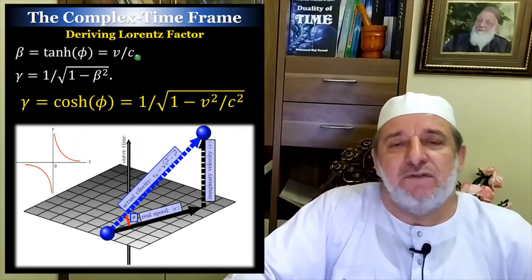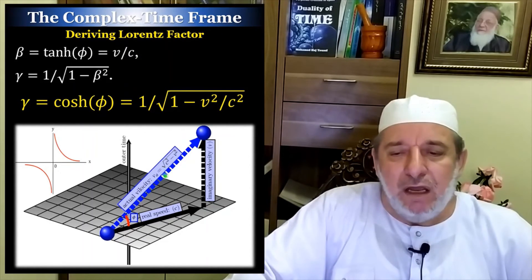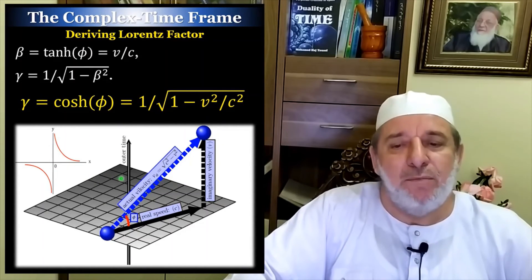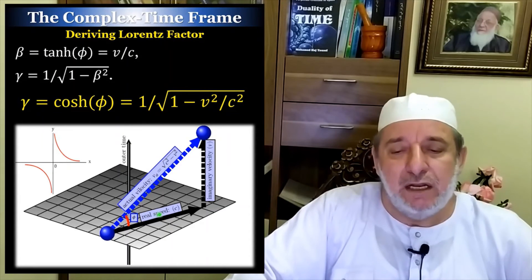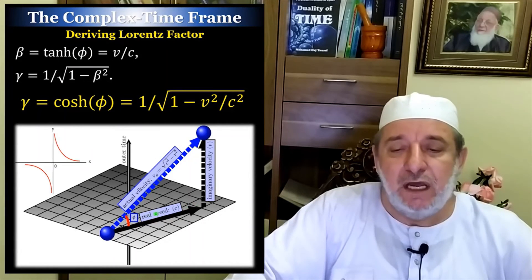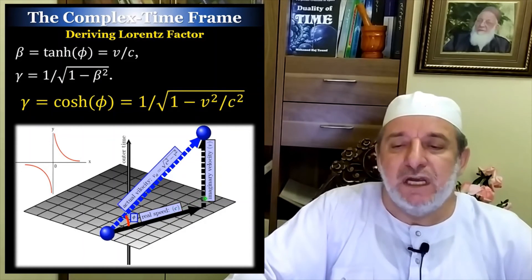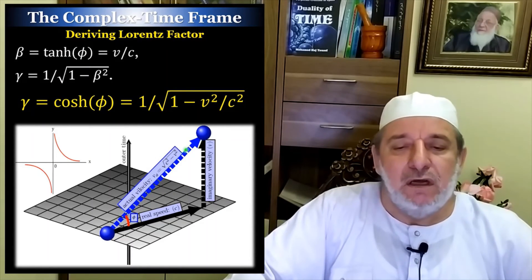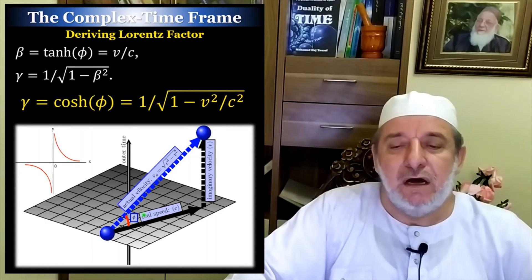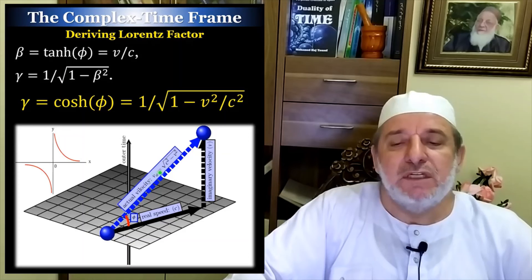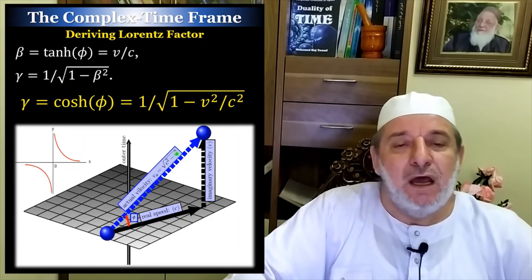The Lorentz factor actually is straightforward because just by looking at the hyperbolic relation or the split complex relation between the inner and outer. So if you are creating space at the speed of C and moving in the imaginary time at any speed V, therefore the total, the actual velocity will be a combination between these two that are perpendicular to each other, but not normal orthogonal. It's hyperbolic orthogonal. Therefore, the actual velocity will be the square root of C square minus V square.